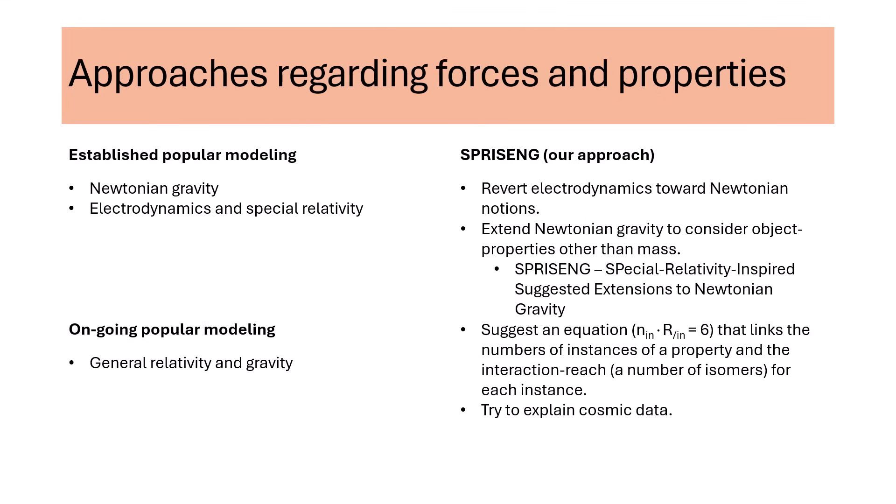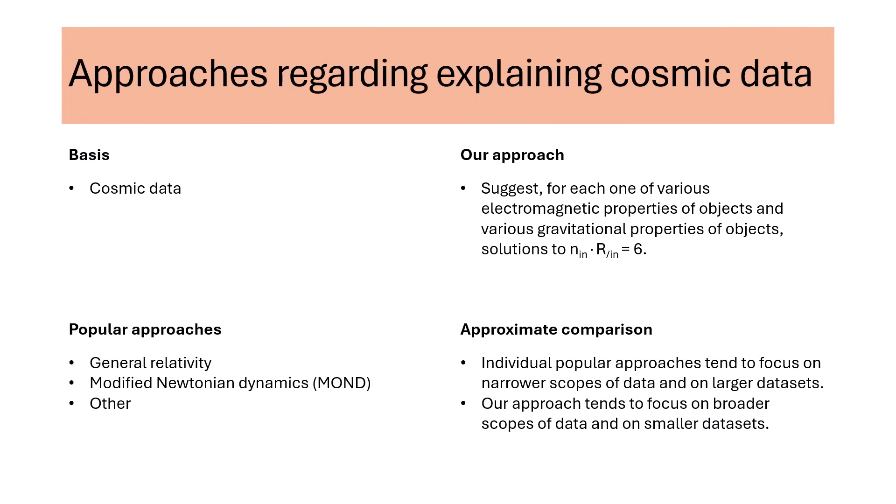We suggest a new approach regarding gravity. A notion that Newtonian force laws might be invariant with respect to special relativistic interpretations of properties of objects plays a role. Our approach suggests gravitational properties, beyond just mass, of objects. We suggest that solving, for each one of various electromagnetic properties and various gravitational properties of objects, one equation can help explain cosmic data.